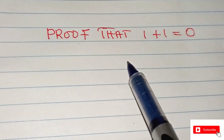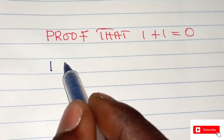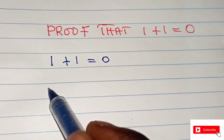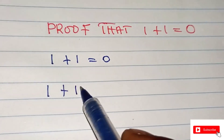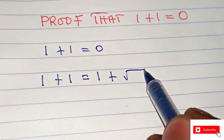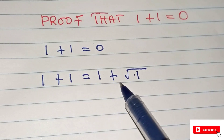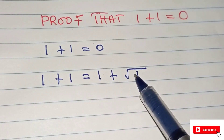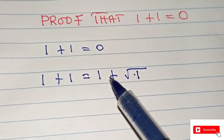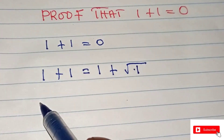So let's get started. One plus one equals zero — right? We begin with one plus one equals one plus the square root of one, because the square root of one is one. So the right-hand side equals the left-hand side.